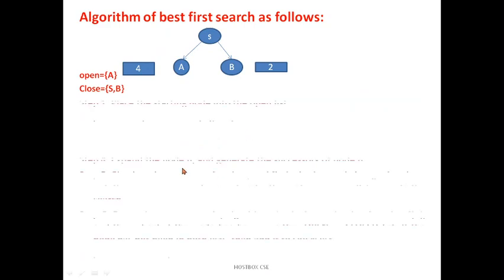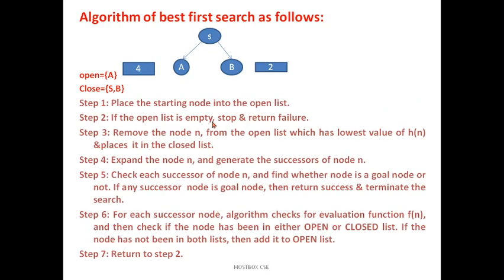Let's cover the steps involved in the algorithm. Step 1: Place the starting node into the open list. Step 2: If the open list is empty, stop and return failure. Remember whenever best-first search algorithm finds the solution for the given problem, you have to consider two kinds of lists - one is called open and one is called closed. Let's assume that you have node S and successor nodes A and B, and the heuristic value of A is 4 and B is 2.